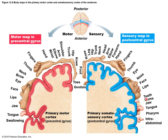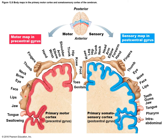A cortical map shows which areas of the brain control or receive sensory information for different body parts. The motor strip shows that the hip and trunk have smaller representations, while the fingers and face have much larger areas, reflecting the fine motor control needed. The same mapping applies to sensory areas, showing proportional representation based on sensitivity and functional importance.